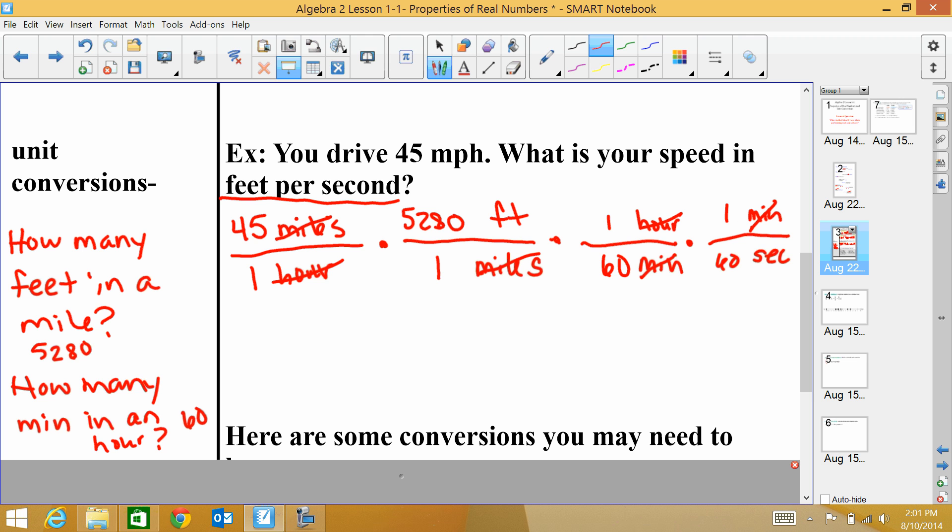So now I'm going to take 45 times 5,280 times 1 times 1, which would equal 237,600 feet. And on the bottom I have 1 times 1 times 60 times 60, which would equal 3,600 seconds. And I want to make this simpler. So I'm going to divide it. So 237,600 divided by 3,600 is 66, and this is in feet per second. So that is my answer.